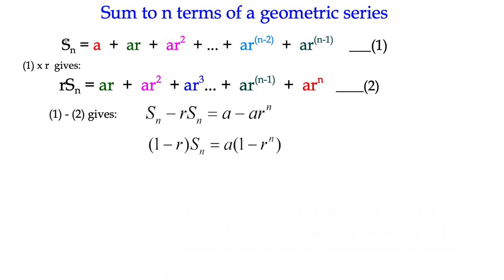So we've got, on the left-hand side, sn, sum minus r sn. On the right-hand side, we've got the red term, we've got a here, which we don't have anything matching to subtract it to, so we're going to get a.